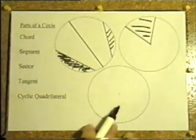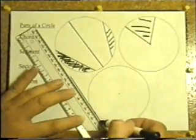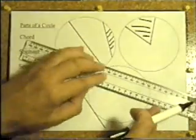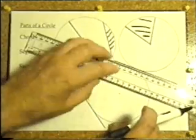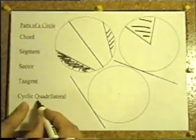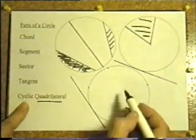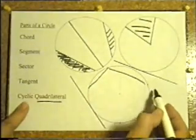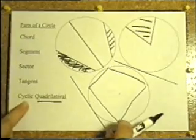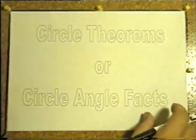Tangent — a tangent is a straight line touching a curve. It doesn't actually have to be a circle, but here we're doing circle theorems. A tangent is a line just touching the circle. And the last one: cyclic quadrilateral. Quadrilateral means a four-sided shape, but if the points of the quadrilateral are actually on a circle, then you've got a special quadrilateral called a cyclic quadrilateral. Now we've got parts of a circle, we can go back to the main point of the session — circle theorems, or circle angle facts.